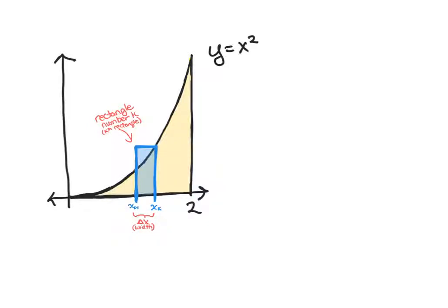All right, so we are looking to find the area between 0 and 2 under y equals x squared and the x-axis, so the yellow shape there. And we're going to do this by splitting it up into n rectangles.